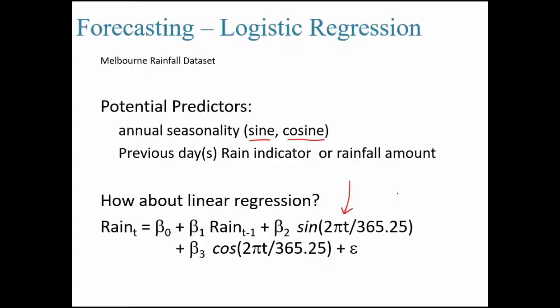366 days, once in four years you have a leap year that constitutes to 0.25. There is an article which states that if you use sine and cosine values you would be able to capture seasonality, especially if you have daily data.